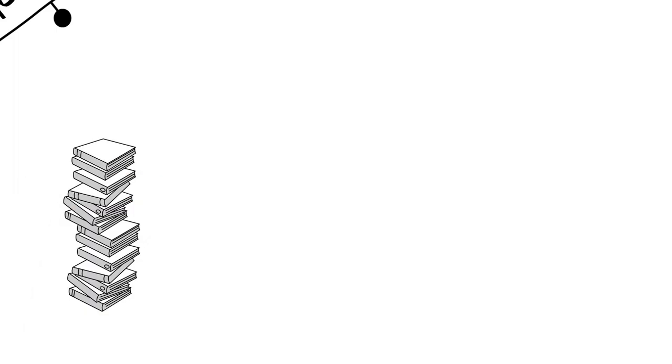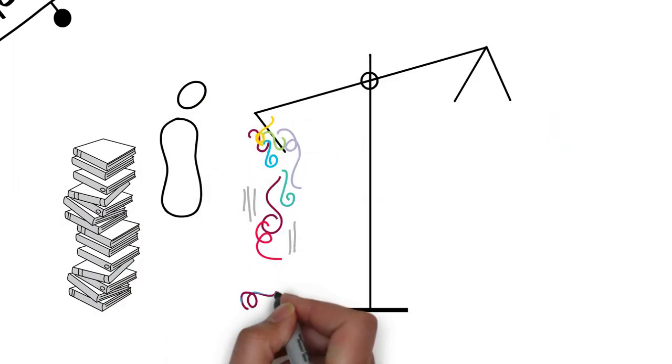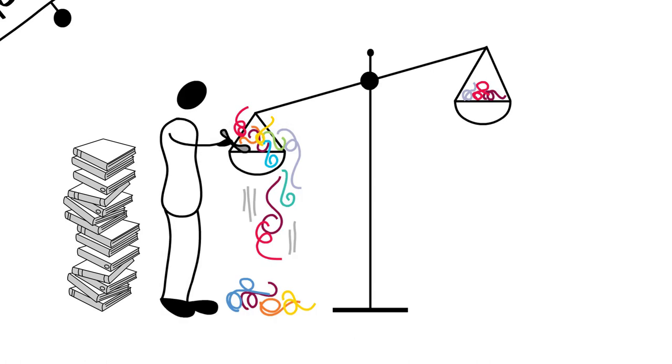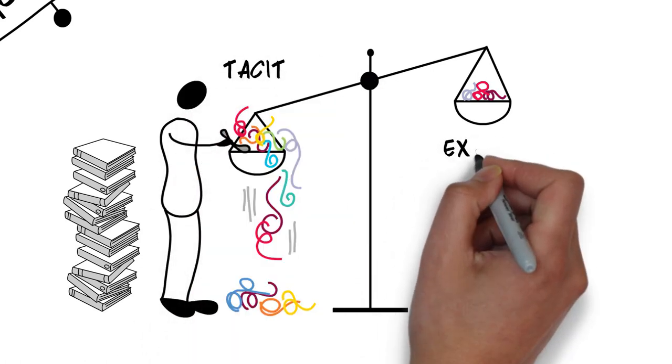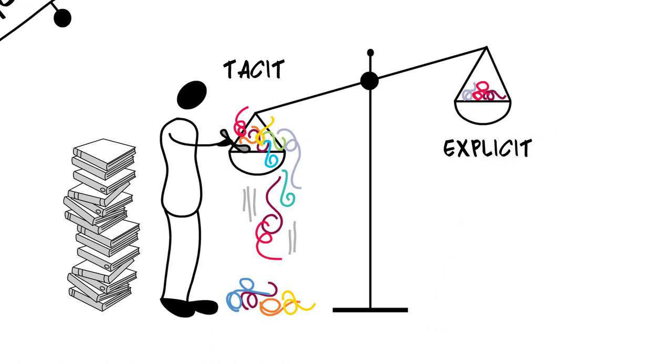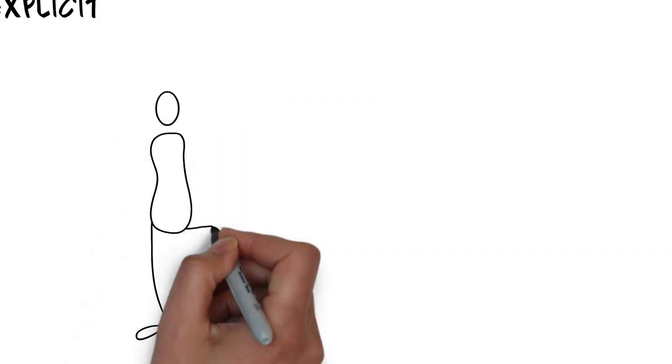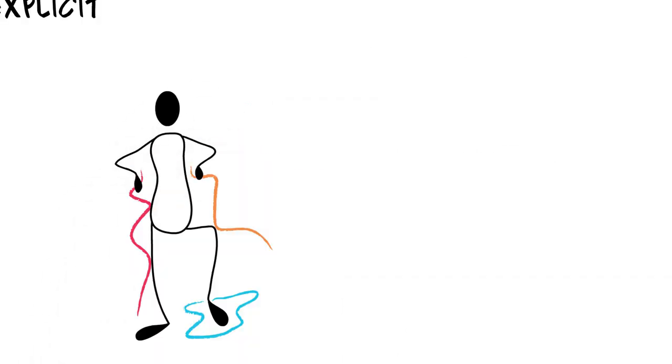Scholars divided knowledge into explicit knowledge, things that can easily be documented in books, for example, and tacit knowledge, knowledge that's inside us by virtue of who we are. Tacit knowledge includes things we don't even know we know.